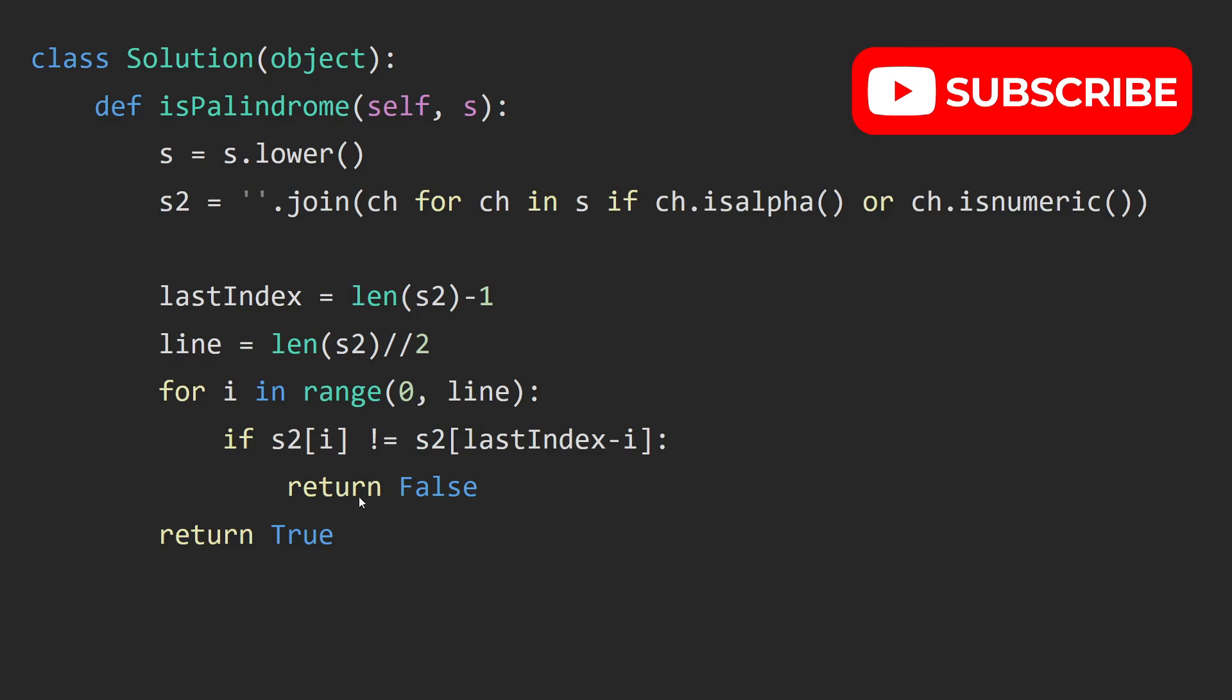We return false. And after we finish looping through the line, we know that it is a palindrome, so we return true.